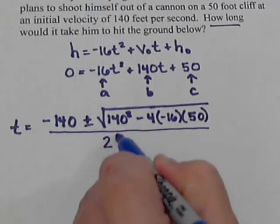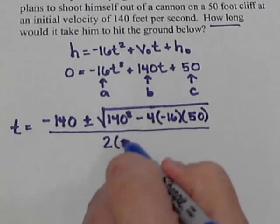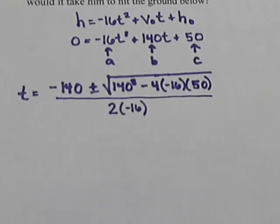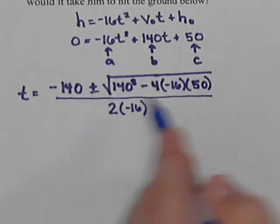All of this divided by 2, times our a value, which is negative 16. That's the first step. We're going to plug a, b, and c into the formula.